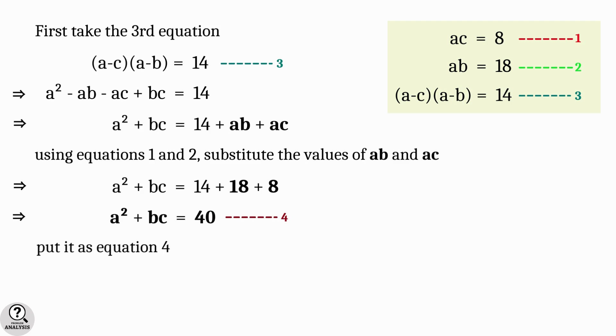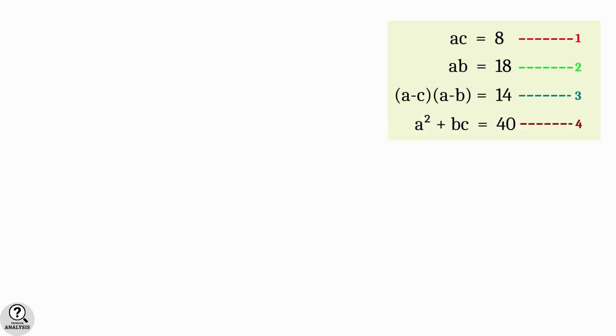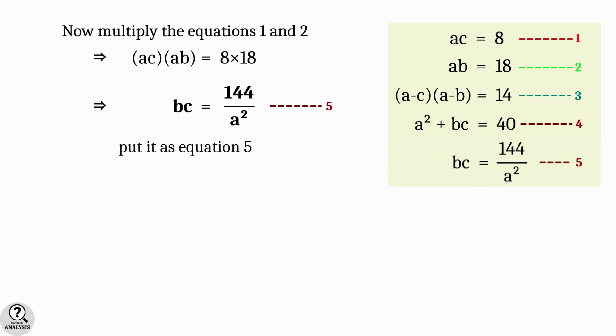In this equation, if we can substitute bc in terms of a², then we are very close to the solution. For that, multiply the equations 1 and 2. That is, ac into ab equal to 8 into 18, which gives bc equal to 144 by a². Put this as equation 5.